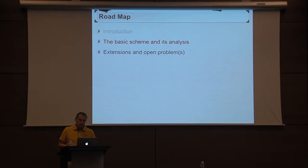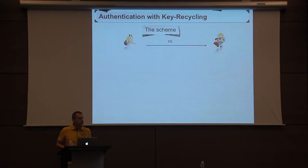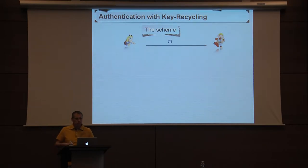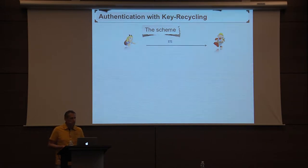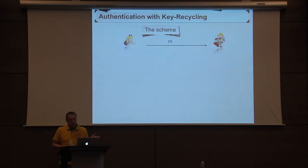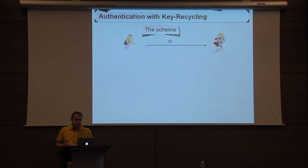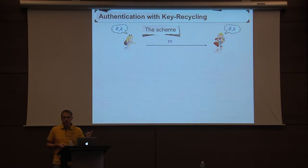So in our basic scheme, we're going to focus on authentication — protecting the message from being modified — and we don't care yet about whether Eve can learn what the message is. Building encryption on top is then not so hard, and I'll say a few words about that later on. As you'll see, our scheme is extremely simple.